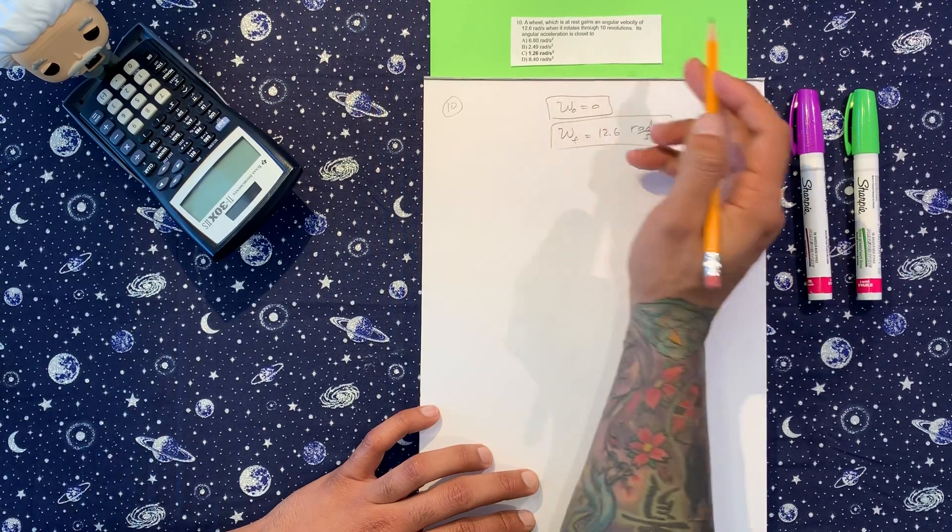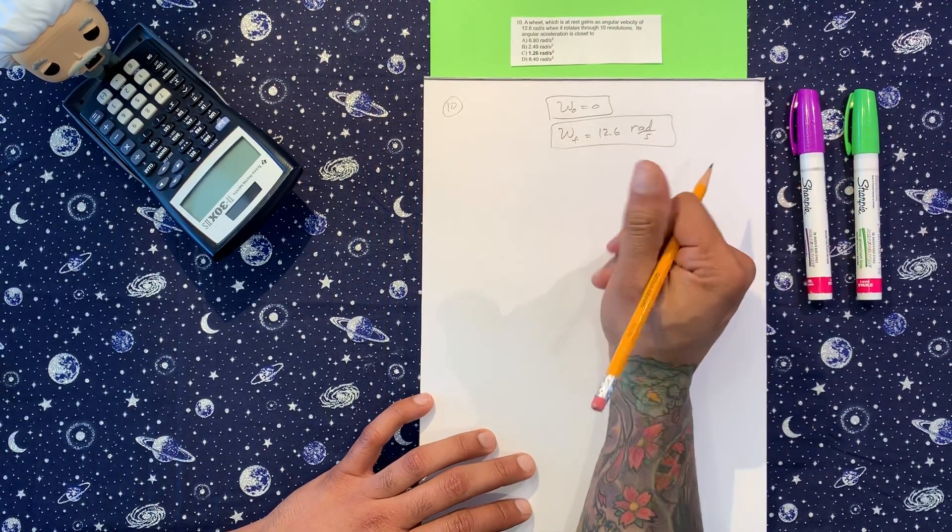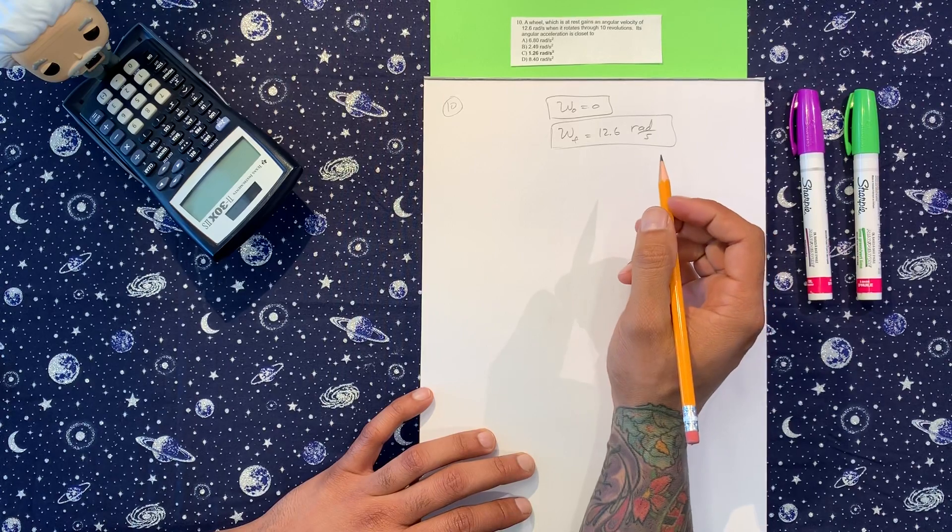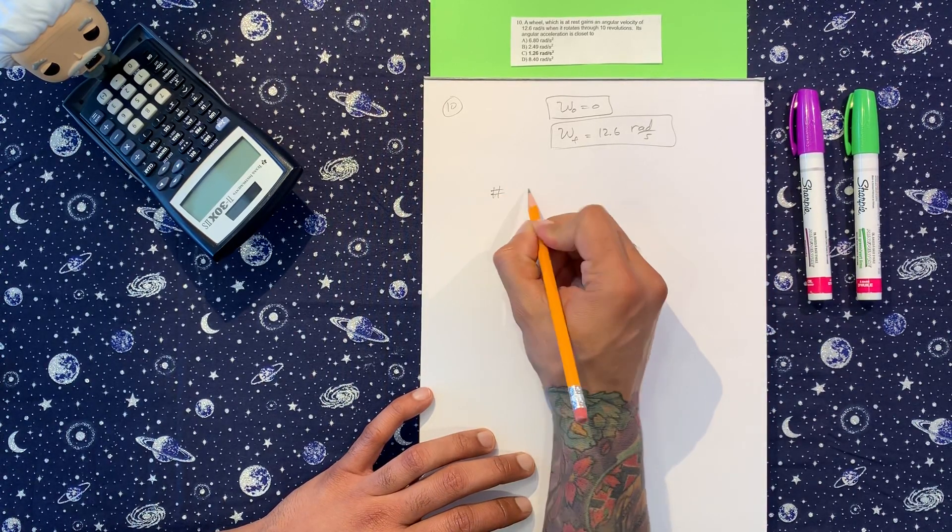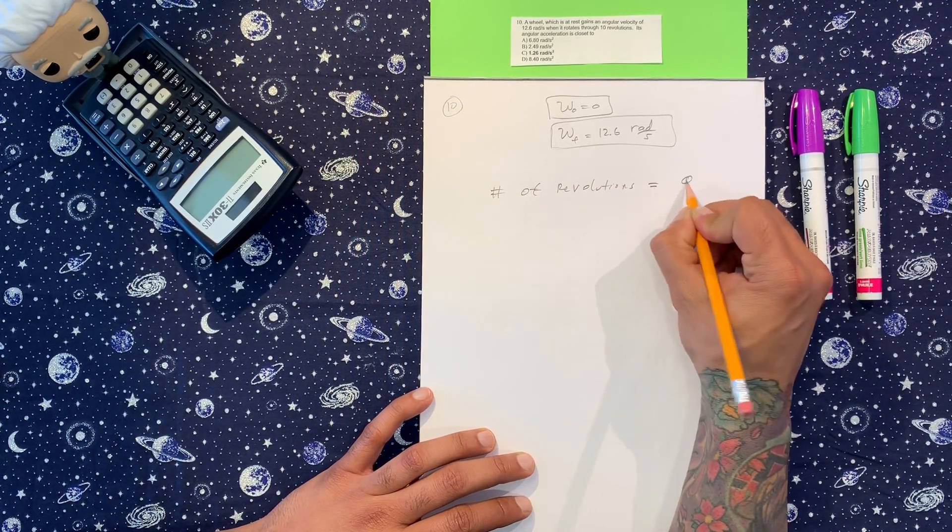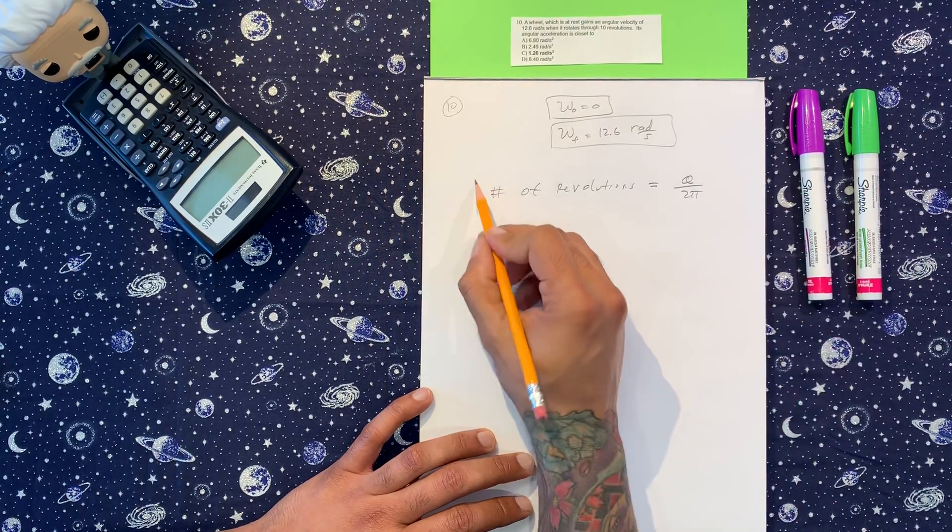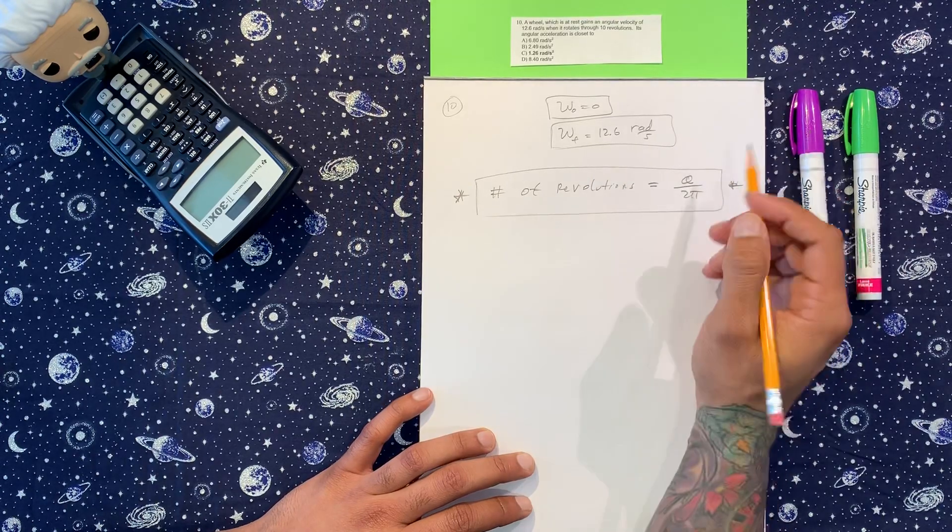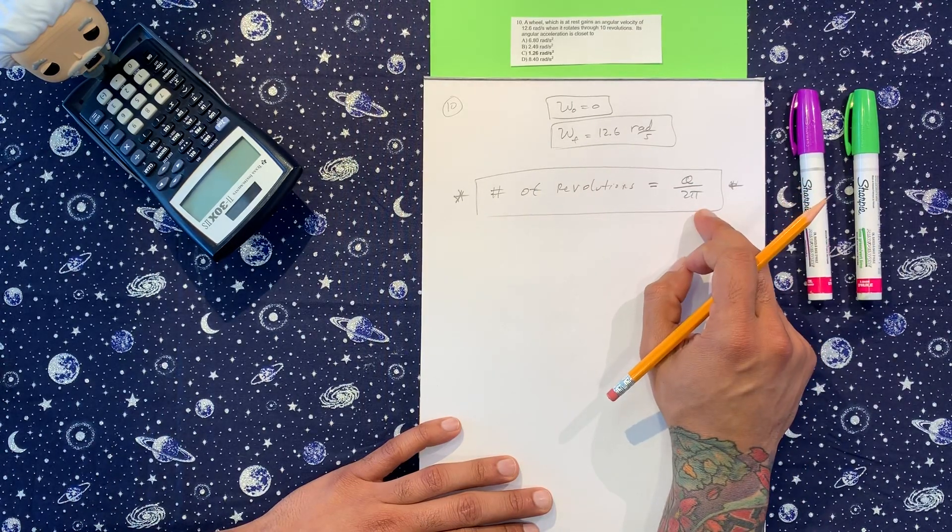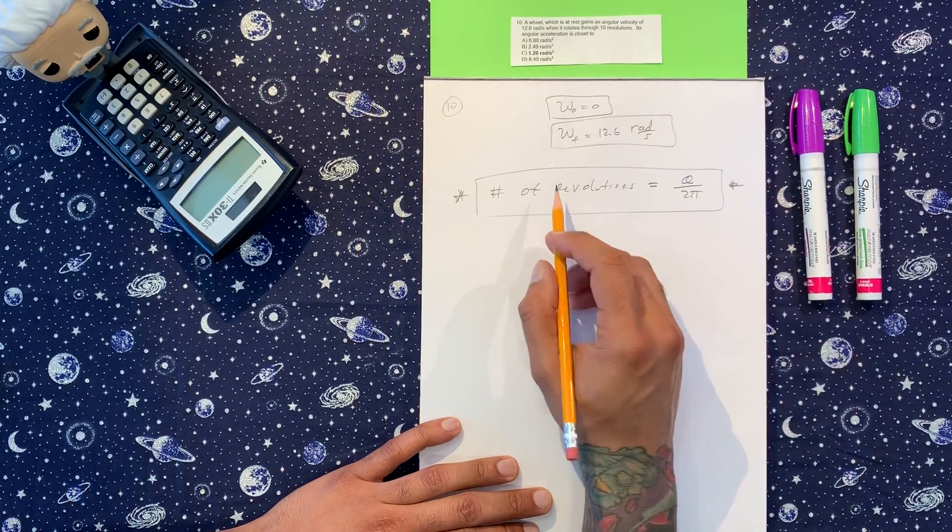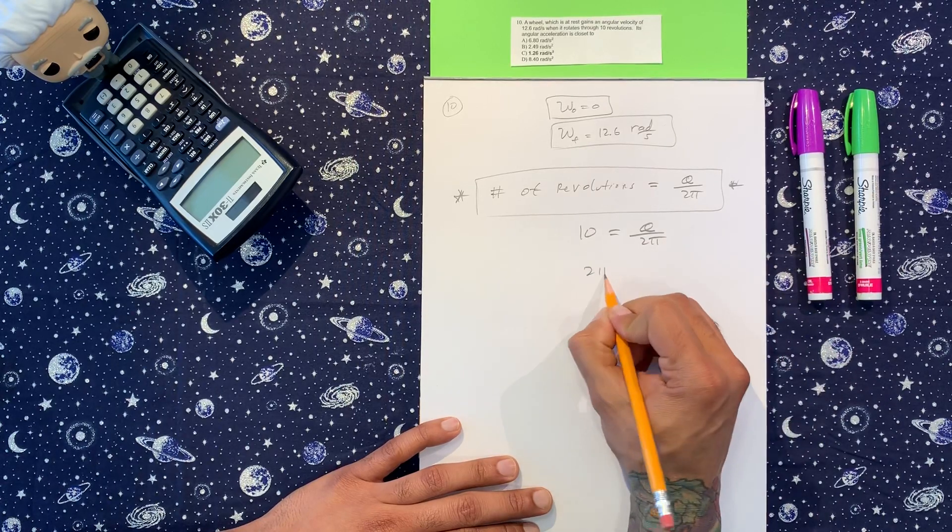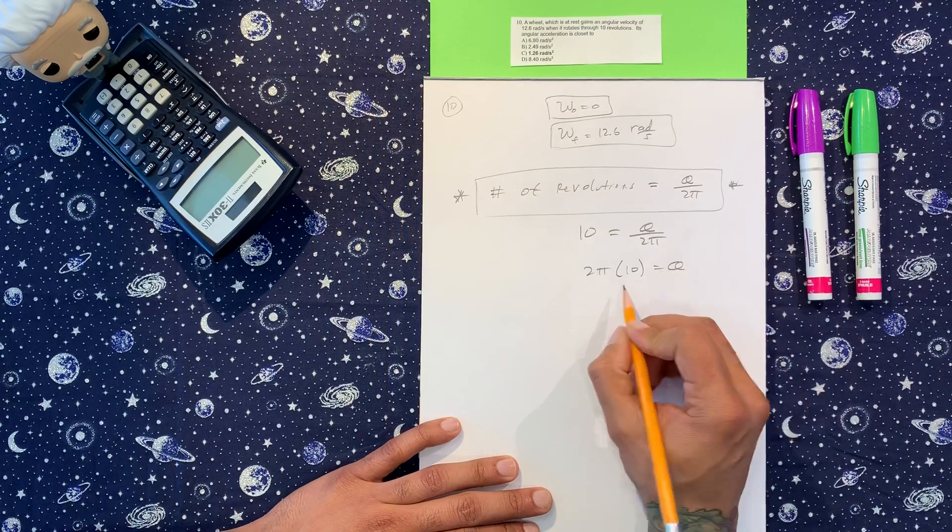When it rotates through 10 revolutions, that one threw me off. But there's a formula to convert it. This is probably the only part you really have to know or memorize yourself. You got the number of revolutions is equal to theta over 2π. I think this is the only thing you might actually need to know for this problem. So we got this coming up next because it says it rotates through 10 revolutions. We're going to put the number of revolutions on this side, we got theta and 2π, I'm going to put the 2π on this side.